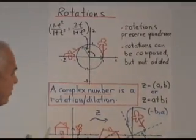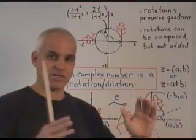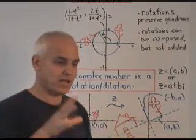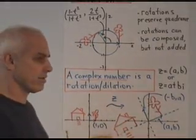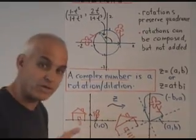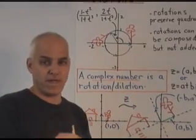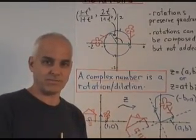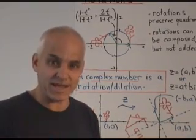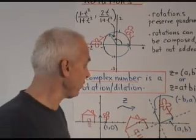All right, so the way we're going to fix this is to enlarge our view to consider dilations and rotations, together. So we're going to consider things which are, we'll call them rotation dilations. And it will turn out that a complex number is nothing more than a rotation dilation. That geometrically is what a complex number is, and it explains a lot of the magic and the mystery of complex numbers, if you look at it that way.